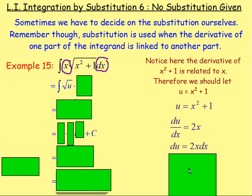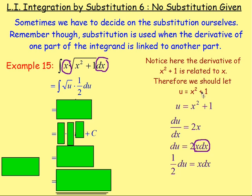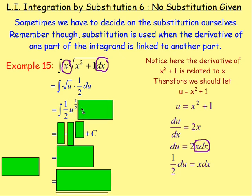We have du equal to 2x dx. But remember, we would have the square root of u, and we're left with an x dx. So what we want to find is what x dx is equal to. We've found that 2x dx equals du, so if we divide both sides by 2, x dx will be equal to one half du. That means we can replace the x dx with one half du. So we'd rewrite it: one half, and then the square root of u becomes u to the power of a half, and then du. So we can integrate one half u to the power of a half with respect to u.